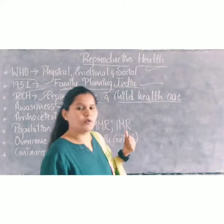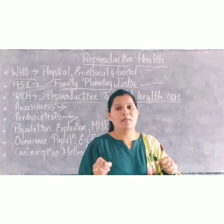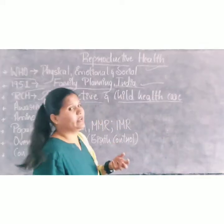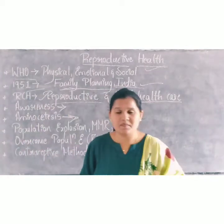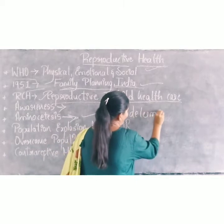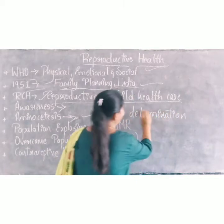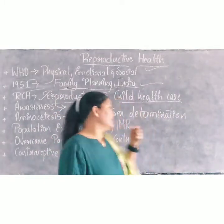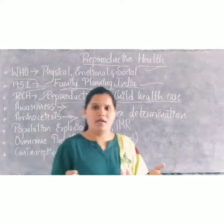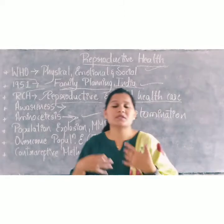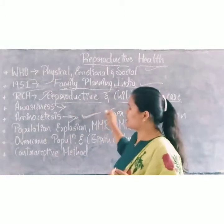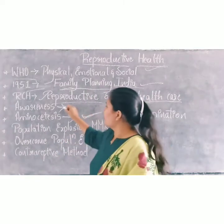Amniocentesis is a process to check the abnormalities of a baby on the basis of chromosomal patterns — to find out the chromosomal abnormalities of the fetus. However, doctors misused it to perform sex determination. Using the amniotic fluid surrounding the embryo, they tried to find out the sex of the fetus. Since female fetuses were being aborted, amniocentesis was banned. These kinds of measures are taken to give awareness to society.